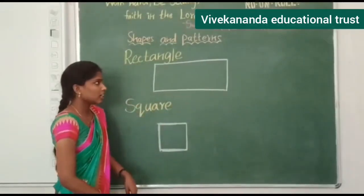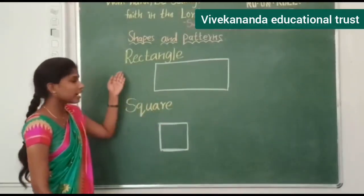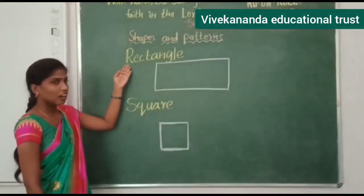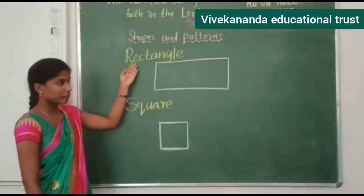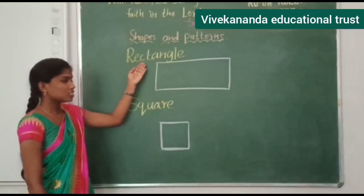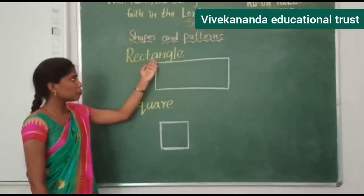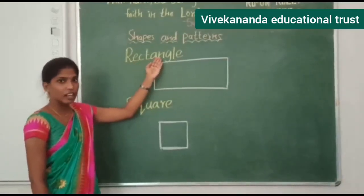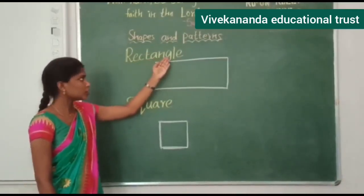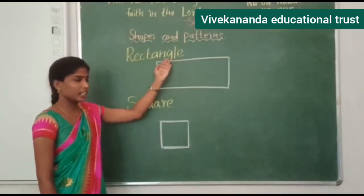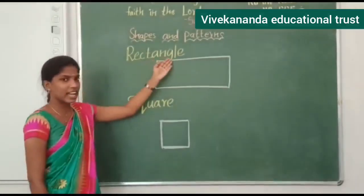So this is the rectangle — it has four corners and four sides, two sides are long, and two sides are short. Can you spell the rectangle? R-E-C-T-A-N-G-L-E. Rectangle.